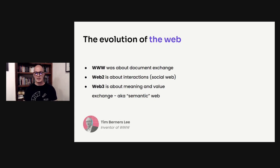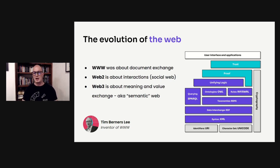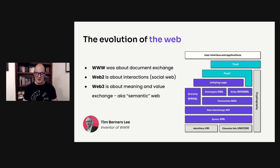Web 3 was originally dubbed the semantic web. We actually heard about this from Tim Berners-Lee himself, the inventor of the World Wide Web, who gave us a technological stack for it. He invented this layered structure of the semantic web — what he called Web 3 — 20 years ago, with familiar components such as URIs and cryptography, but also interesting ones targeted towards semantics: ontologies, query languages like SPARQL, data interchange formats, and on top, a layer of proof and trust.